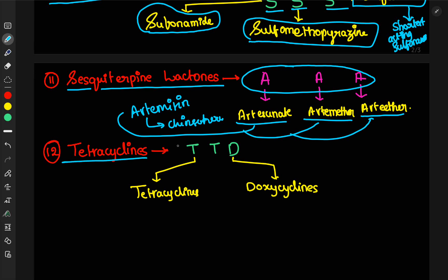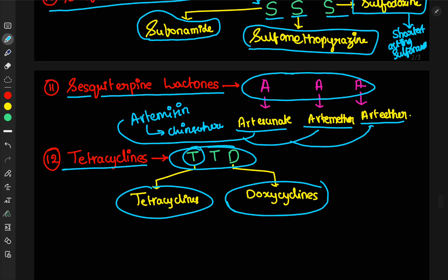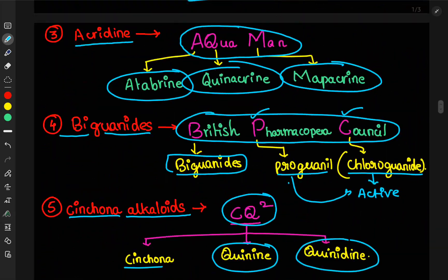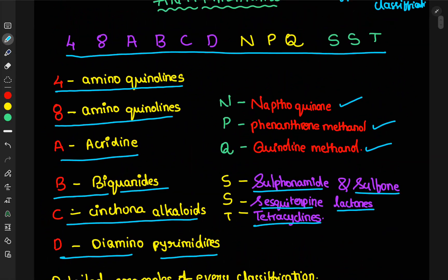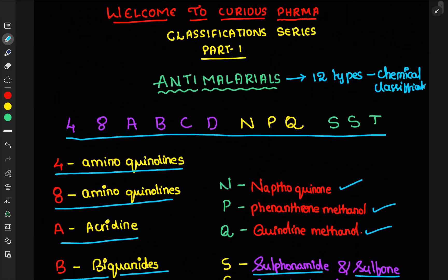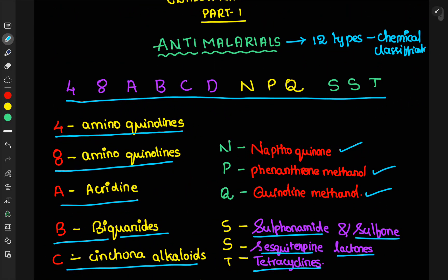Next, tetracyclines. Here, you remember the TTT. That is Tirumala, Tirupathi, Devasthanam. In that, the first T denotes tetracyclines. Second T denotes, sorry, D denotes doxycycline. These are the major classifications, major examples and classifications which are very important for the GPAT preparation. So, by these short words, you will be able to remember everything. Every example. So, I think it is helpful for you. Thank you.